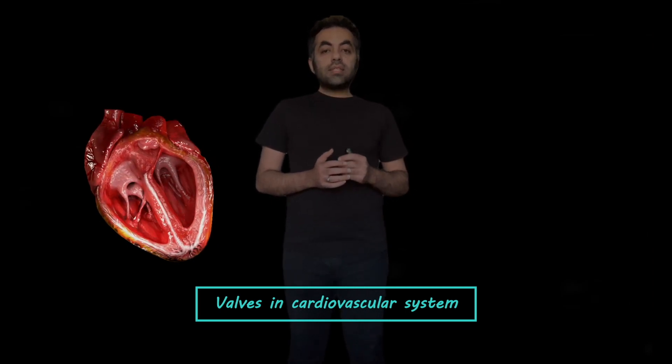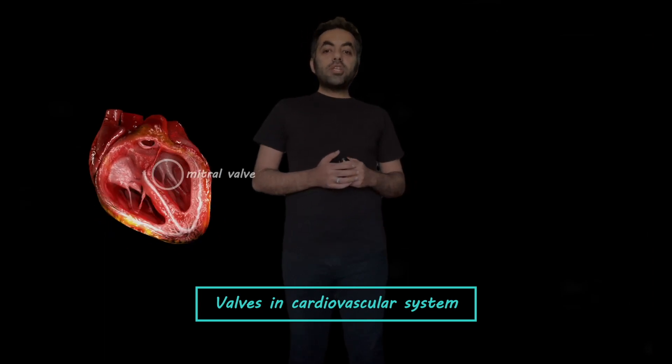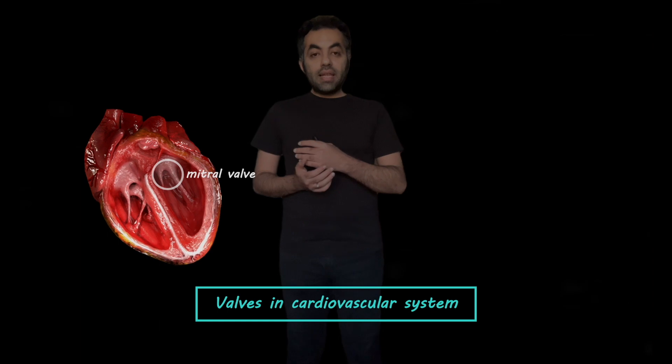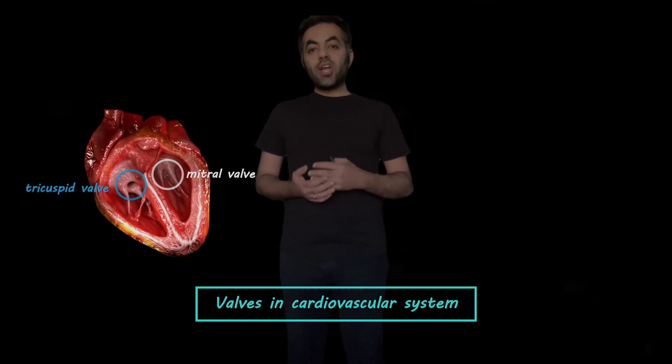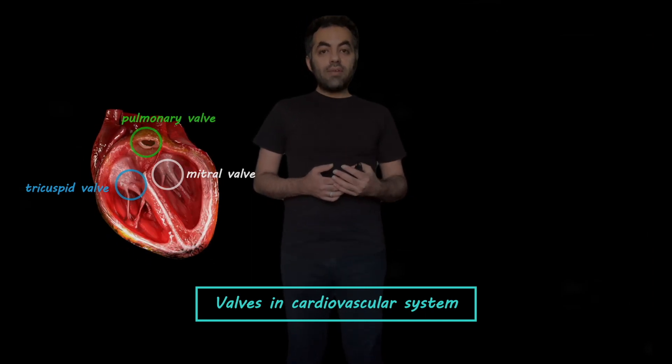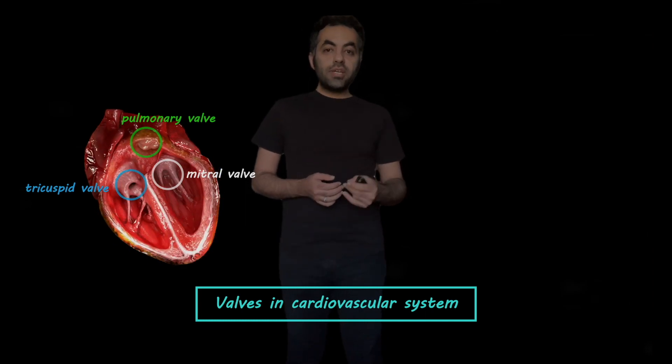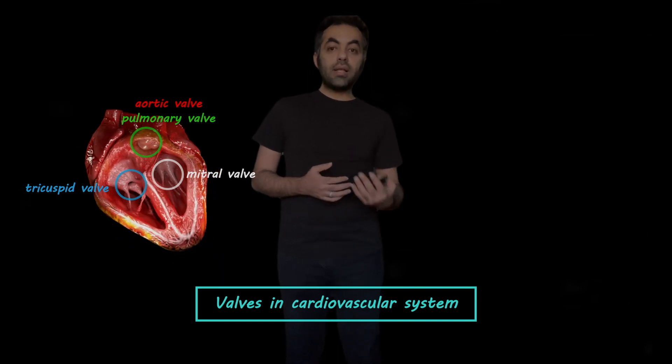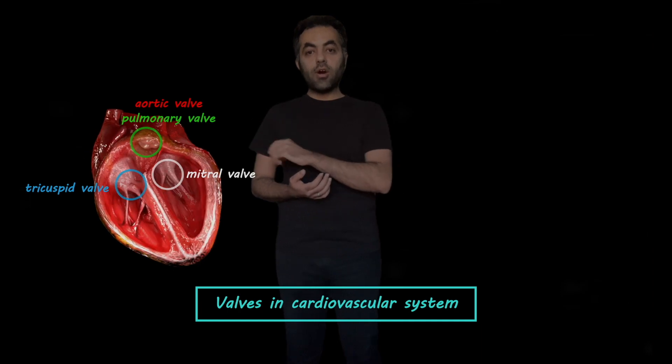We all know that there are four valves in the heart. The mitral valve is located between the left atrium and left ventricle. Similarly, tricuspid valve is located between right atrium and right ventricle. Then the pulmonary valve is located between the right ventricle and pulmonary artery. And similarly, aortic valve is located between the left ventricle and aorta, which can't be seen in this cross-section of the heart here.